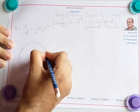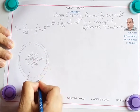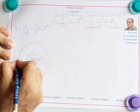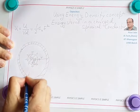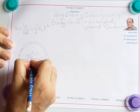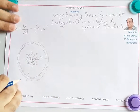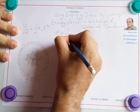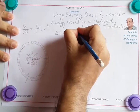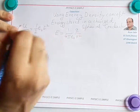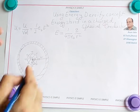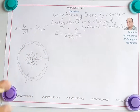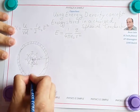We will find the energy stored in this differential element and then integrate to get the total energy stored in the electric field. At distance r from the center of the spherical conductor, the electric field is given by 1 over 4 pi epsilon naught times q over r squared. For outside points, it behaves like a point charge at the center. In this differential element, we can assume the electric field remains constant because the thickness dr is very small.